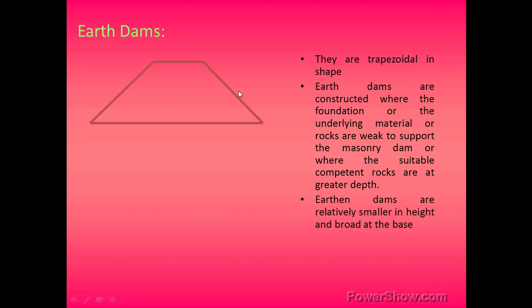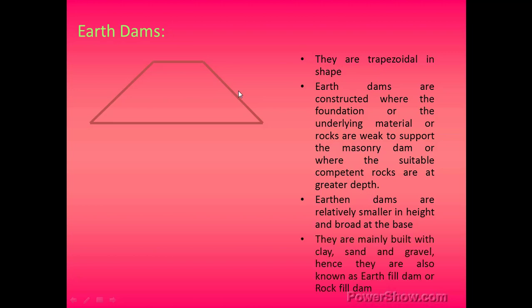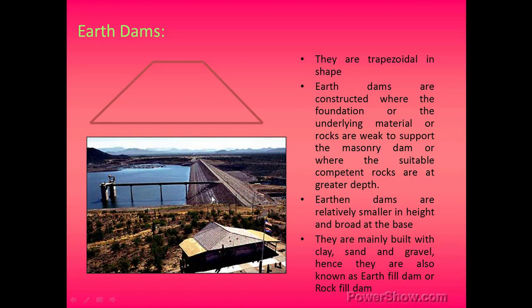Another type is earth dams, used where the foundation or underlying rock material is weak to support masonry dams, or where suitable competent rocks are at great depth. Earth dams are relatively smaller in height and broad at the base. They are mainly built with clay, sand, and gravel, and are also known as earth-filled dams or rock-filled dams. They are constructed of boulders, soils, clays, etc., normally in a trapezoidal shape, at points where the foundation soil is weak. This is the end of today's lecture.